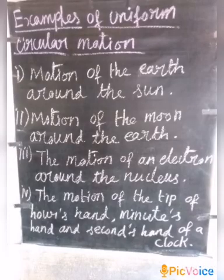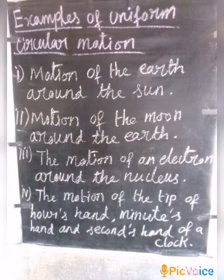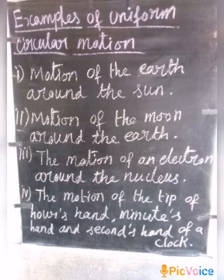Now, examples of Uniform Circular Motion. There are three examples: the motion of the Earth around the Sun, and similarly, the motion of the Moon around the Sun.